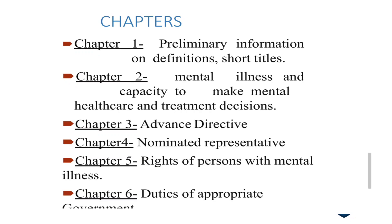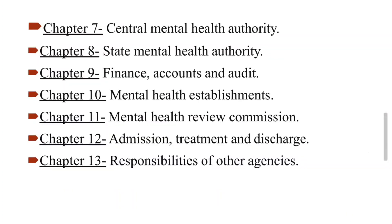Chapter 6 covers the duties of the appropriate government — both state and central governments — regarding the care of mentally ill patients and mental health institutions. Chapter 7 covers the responsibilities of the central mental health authority, and Chapter 8 covers the state mental health authority responsibilities. Chapter 9 deals with finance, accounts, and audit — including budgets allocated for mental health institutions and whether they are utilized properly, with periodic auditing.